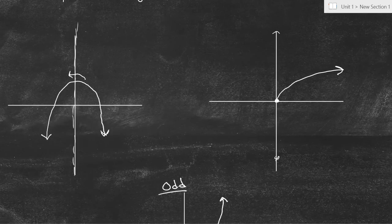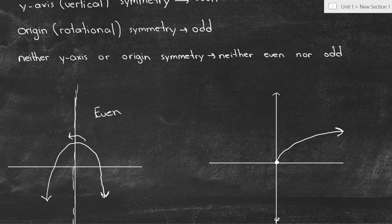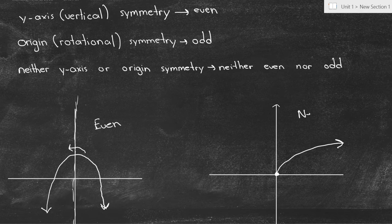So this function is odd. This function is even. And because this function had neither y-axis symmetry or origin symmetry, this function is neither.